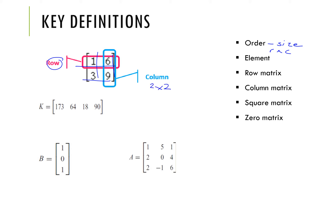Looking at three example matrices: K has one single row and four columns, so it is a one by four matrix. B has three rows and one column, so it is a three by one matrix. And A has three rows and three columns, so it is a three by three matrix.